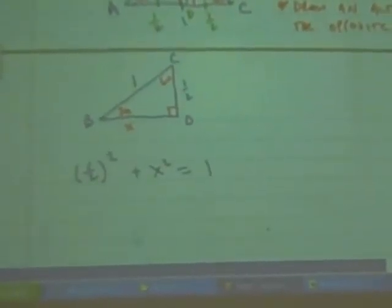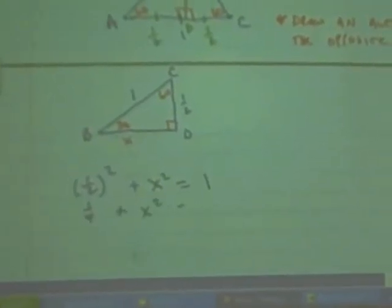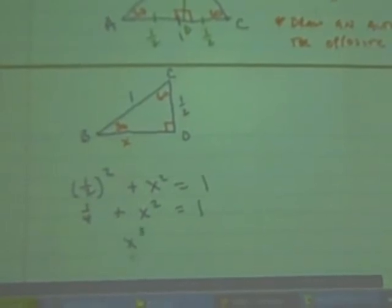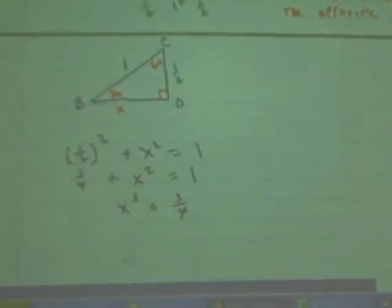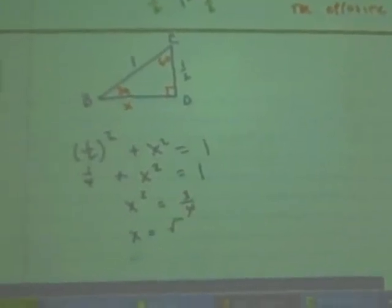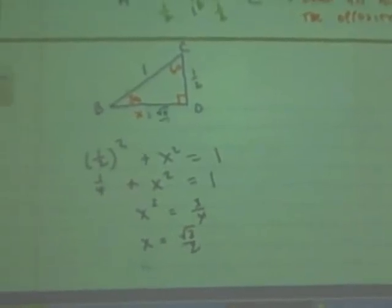What's one half squared? One fourth. You want to subtract one fourth from both sides? What's one minus one fourth? Three fourths. And I want to take the square root of both sides. What do I get? Square root of three over two.